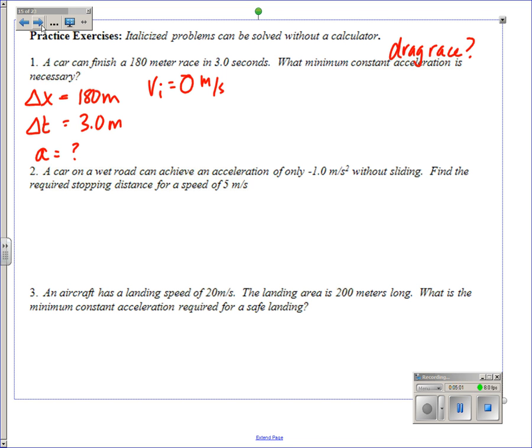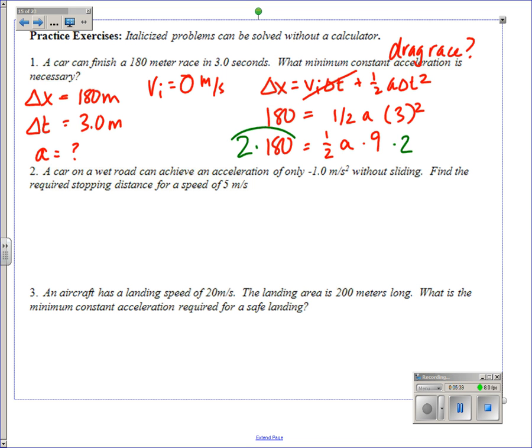Once I've done that, solving the problem is relatively straightforward. I plug in my variables. Vi is zero so this whole term goes away. What I've got here is 180 equals one half a times three squared, or 180 equals one half a times nine. To solve this, I would multiply both sides by two, so we get 360, and then divide both sides by nine. 360 divided by nine is 40, so our acceleration would be 40 meters per second squared.